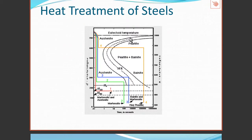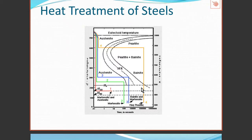The important elements of the curve shown are this nose shape. There are three lines showing the start of the transformation, the midpoint shown as a dotted line, and the end — the rightmost line of the nose. Then we have horizontal lines which tell us when the martensite starts, when we have 50% martensite, and then 90% martensite.